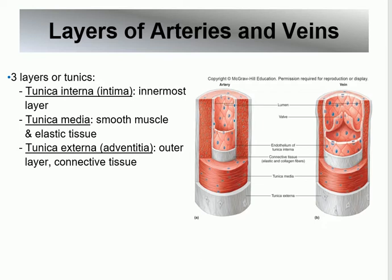Tunica means layer, and tunica intima is intimate to the blood, so it's the innermost. The middle layer — remember M goes with M, middle and muscle — is always muscle in any hollow organ in the body. So the middle layer is the big chunk of muscle, and the outermost is called tunica externa or adventitia.